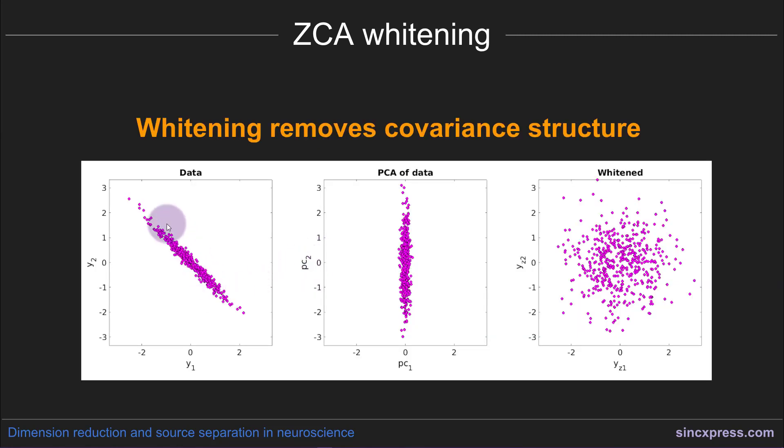So here we have some data, these are strongly correlated data, and the principal components analysis of these data would produce two vectors, two eigenvectors, and one would go in this direction and one would go in this direction.